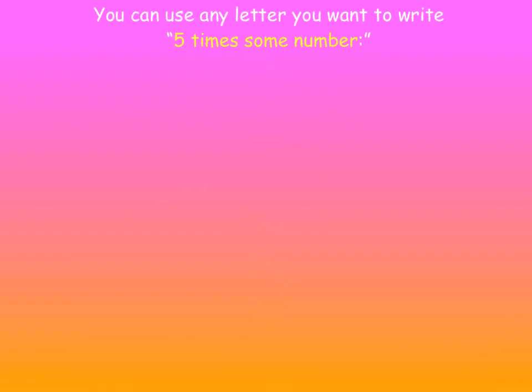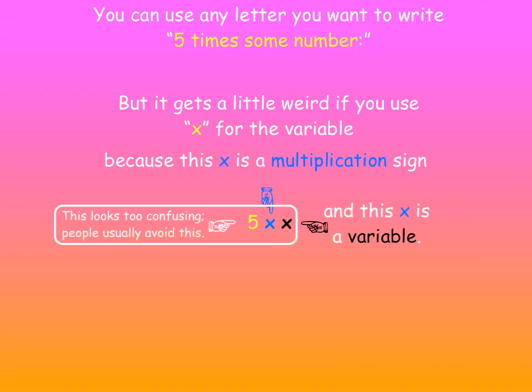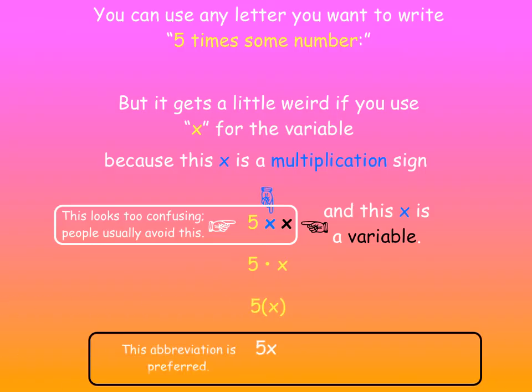You can use any letter you want to write 5 times some number. You can write 5A, 5B, 5X, 5Y, 5Z. But it gets a little weird if you use X for the variable in this situation, 5XX, because this X is a multiplication sign and this X is a variable. Okay, this looks too confusing. People usually avoid this. They'll just use a dot or parentheses. Or usually, they just write 5X. This abbreviation is preferred. It still just means 5 times some number.